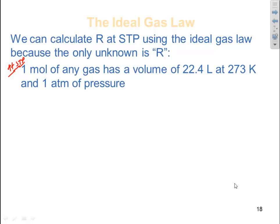One mole of any gas has a volume of 22.4 liters at 273 Kelvin and one atmosphere of pressure. So we have all the variables, the only thing that's missing is the R, so we can just plug into the equation and solve for R.